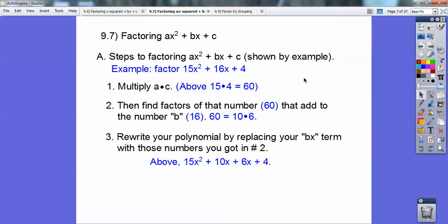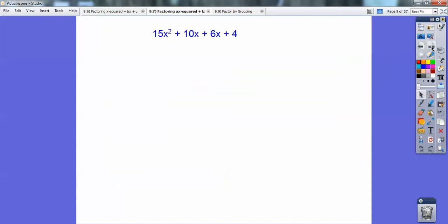So the next thing we do is we're going to replace this 16x with these two numbers, 10x and 6x. So there it is right there, 10x plus 6x: 15x² + 10x + 6x + 4. And then again, you have to have watched the factoring by grouping lesson, which is section 9.9. Go watch that if you haven't yet. It won't make sense, you guys.